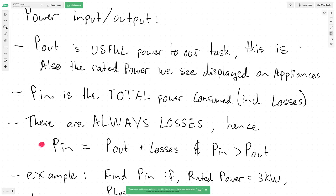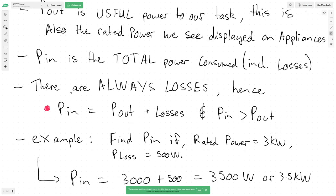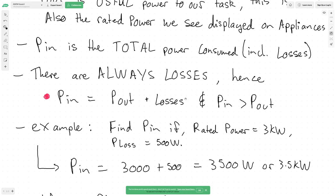P-in, or power input, is the total power consumed, and that includes your losses — any power that is a loss. Within any system there are always losses; no system has been found without them. The key formula here is: P-in equals P-out plus losses. Another way to put it: total power consumed equals useful power plus unuseful power combined.